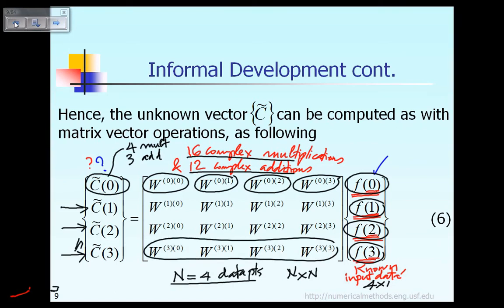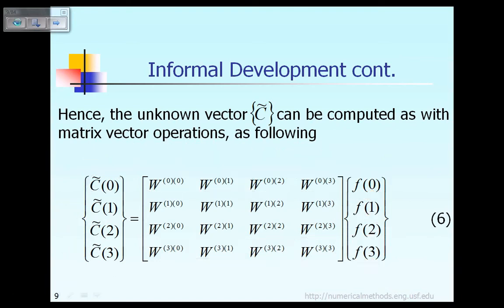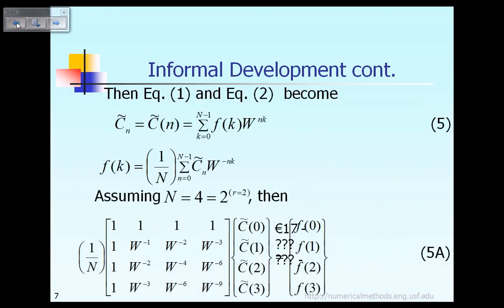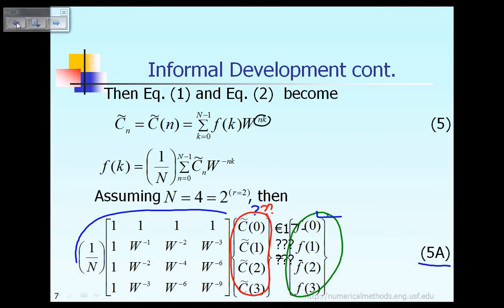What you have for the last row is W raised to the power of 3 times 0, then raised to the power of 3 times 1, 3 times 2, 3 times 3. The reason you have a product like 3 times 0, 3 times 1, 3 times 2, is because as I told you earlier, if you look back, you see you have a product of W raised to the power n times k.